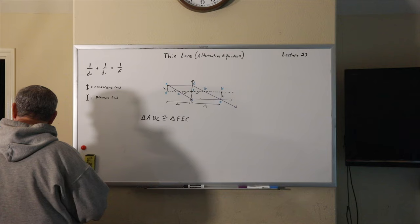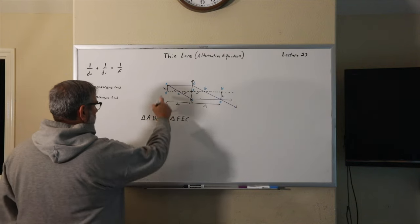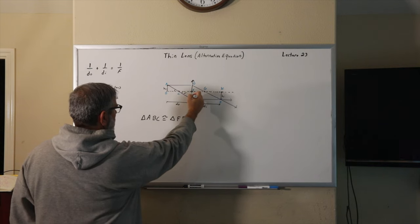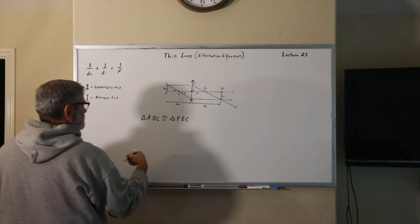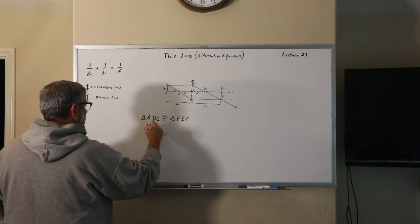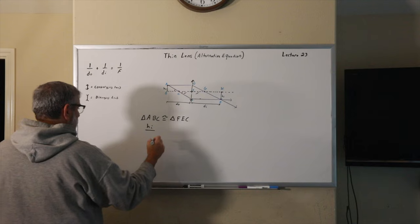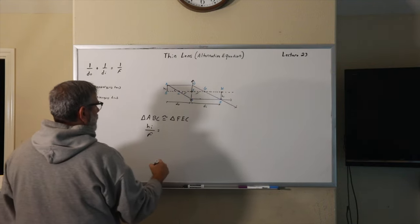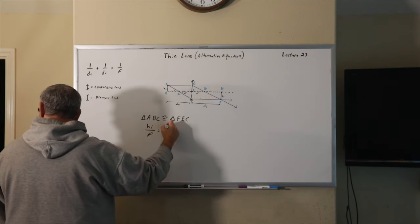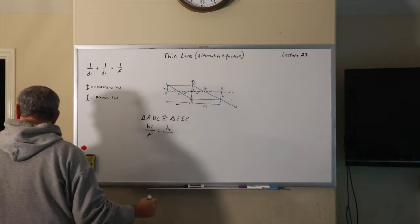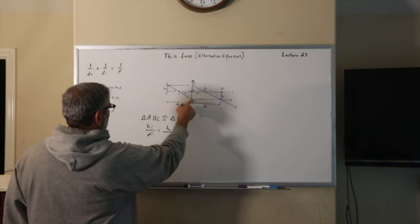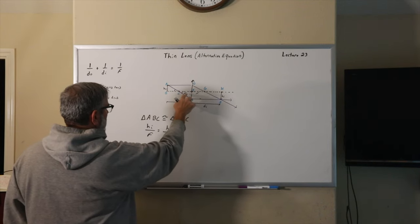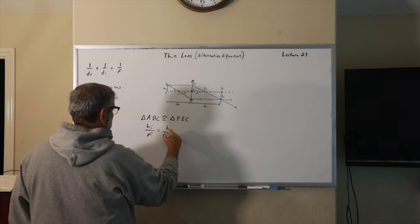Now what does that mean for us? Well, that means that we can write the height here in F, E, C. This height right here, this distance, is HI. So we can write that HI over F, that's this distance here, is equal to HO over DO minus F. It's this little distance right here. So this is DO minus F.